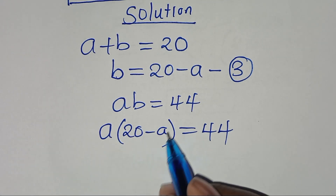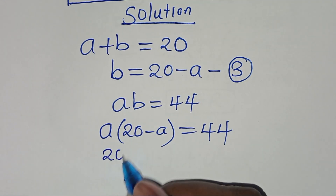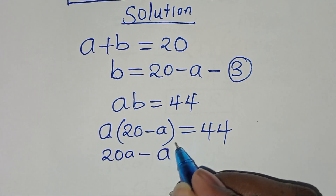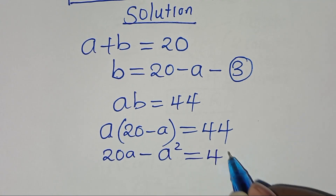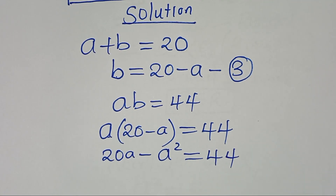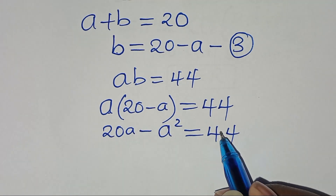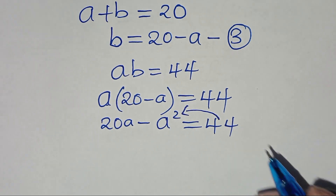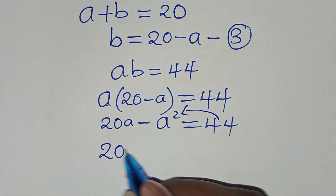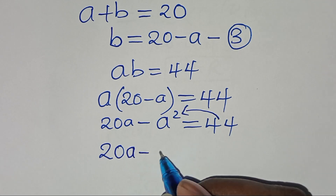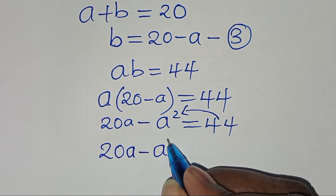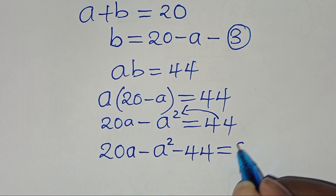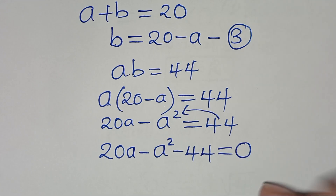So let's expand this: 20 times A is 20A, minus A times A which is A squared, this is equal to 44. The next step is to take 44 to the left-hand side, so that now we have 20A minus A squared minus 44 equals 0.